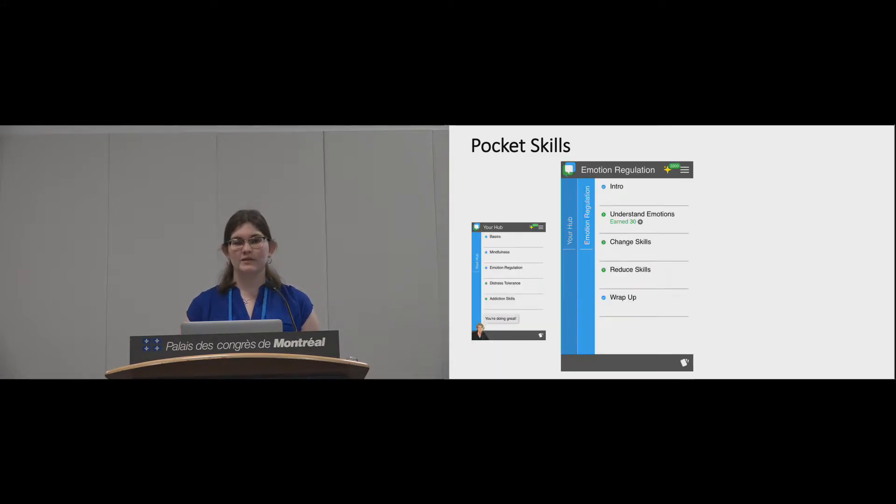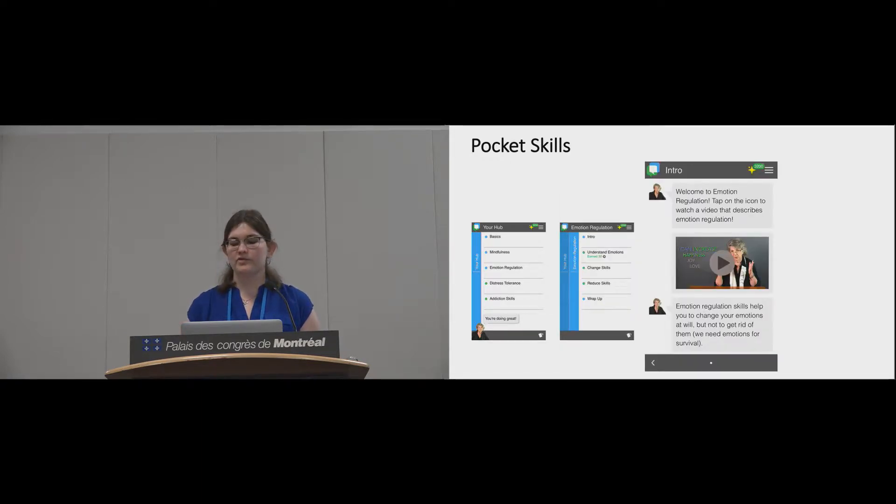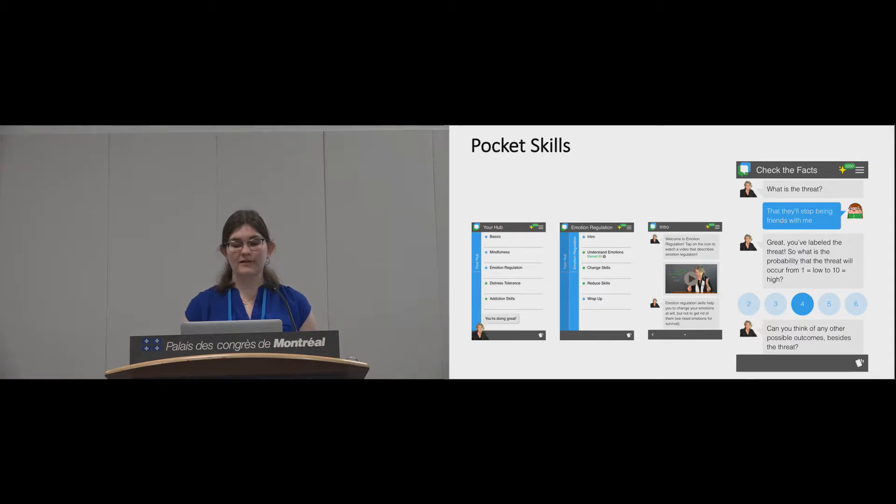Within each module is an introduction to that module and all the skills related to it. Module introductions teach people the principles of the module and help them set module-specific goals. For example, someone using emotion regulation may have the goal of better understanding their emotions. Finally, the skills practice sections help people learn and practice their module-related skills. For example, someone feeling emotionally distressed may want to check the facts of the situation to verify that their emotional response is appropriate given the actual events.